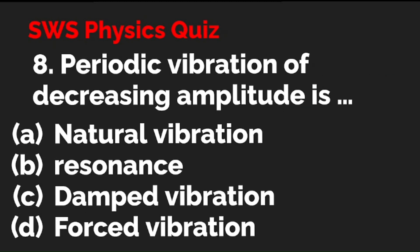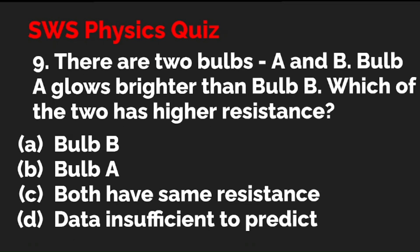Question 8: Periodic vibration of decreasing amplitude is — option A: natural vibration; option B: resonance; option C: damped vibration; option D: forced vibration. The correct answer is C — damped vibration.